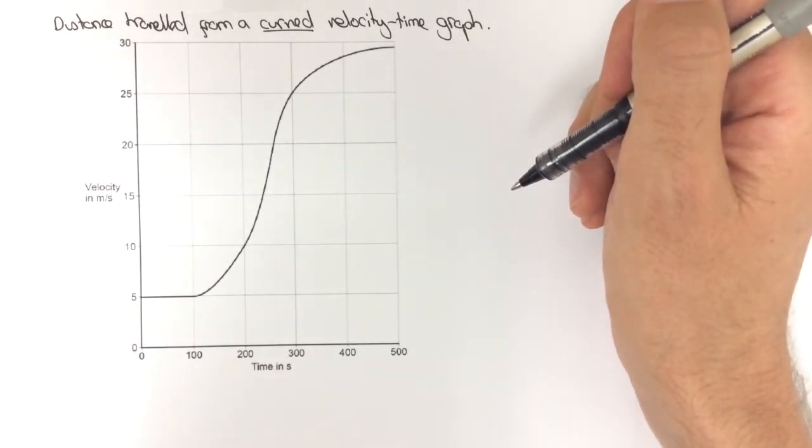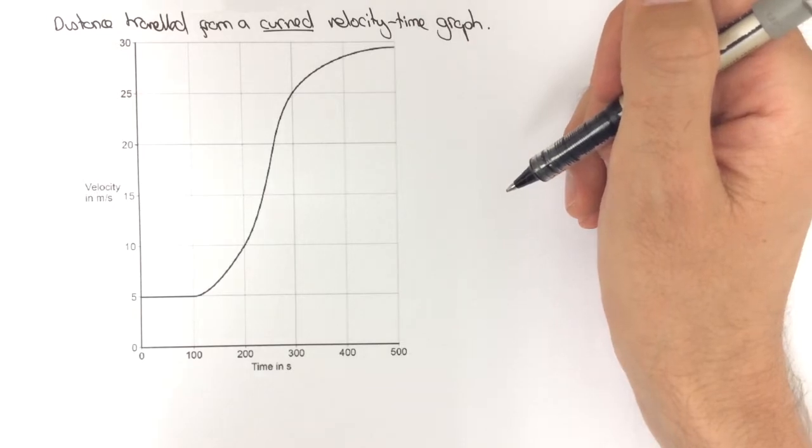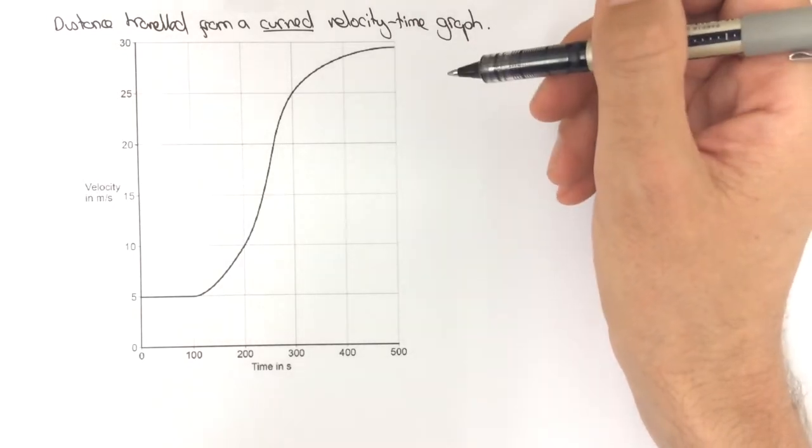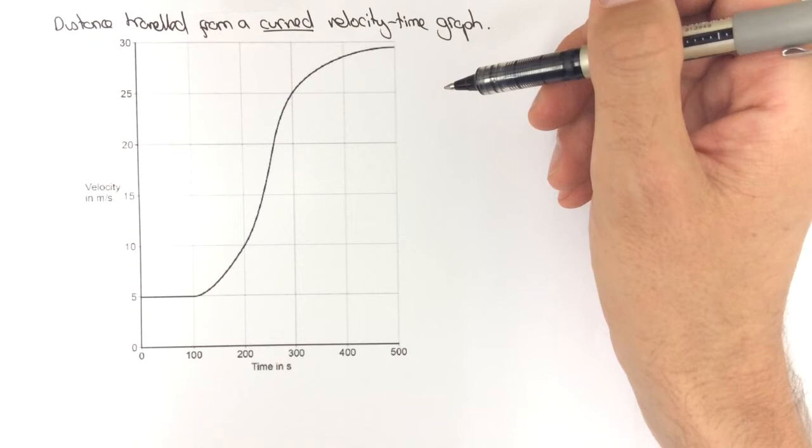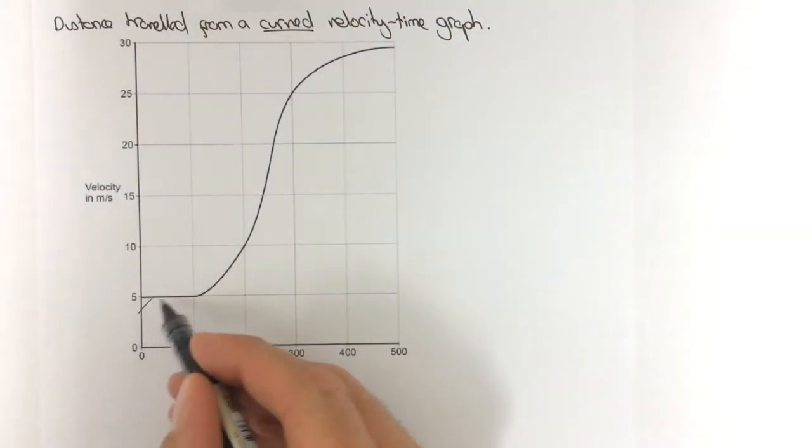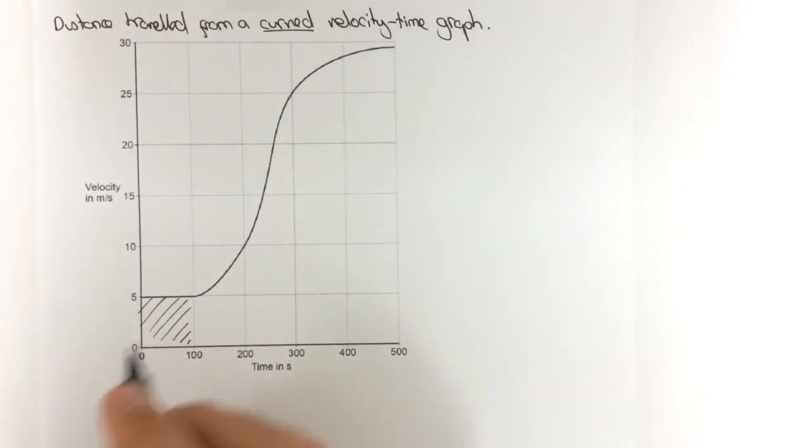So the general method for that is to first of all work out what one square on the graph paper would be worth. So we're going to work out the distance represented by this one square here. So this one square would represent a distance of 5 times 100, so that would represent a distance of 500 meters.